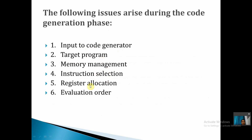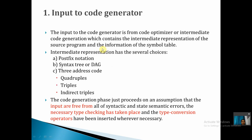The first issue is input to code generation. The code generation will get input either from the intermediate code generator or from the code optimizer. This input can be in any one of these forms: postfix notation, syntax tree form, DAG (directed acyclic graph) form, or any one of the three-address code forms like quadruples, triples, and indirect triples.